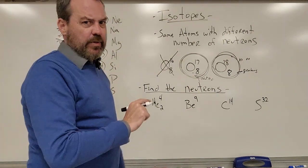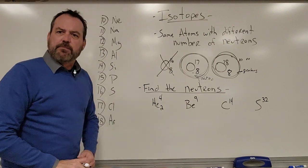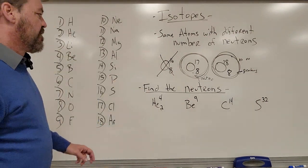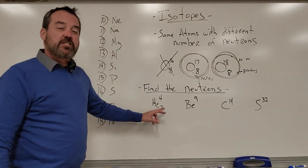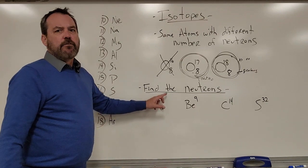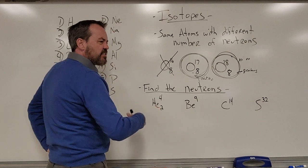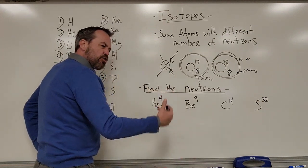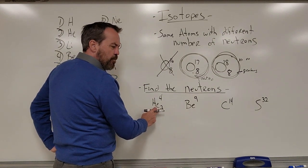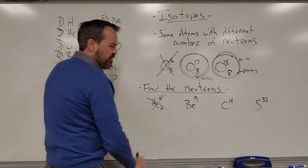Let's find the neutrons and identify isotopes with some examples. First, helium HE-2-4: 2 protons means 2 neutrons and 2 electrons; electrons don't count, so 2 plus 2 is 4. This checks out — it weighs 4 Daltons, two are protons, two are neutrons. This is not an isotope.